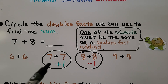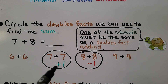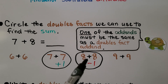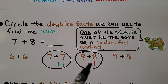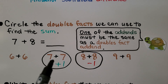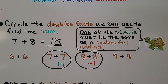If we use 7 plus 7, we do 7 plus 7 plus 1, so that this 7 plus 1 equals the 8. If we use 8 plus 8, we do 8 plus 8 minus 1, because 8 minus 1 gives us that 7. 7 plus 7 is 14, plus 1 more is 15. That means 7 plus 8 is equal to 15.